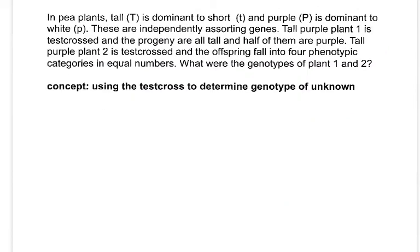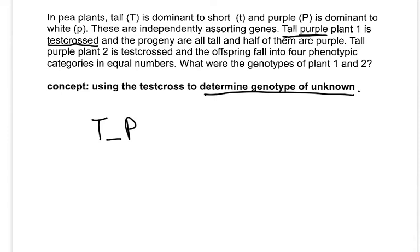Let's do another one with pea plants. Tall is dominant to short, purple is dominant to white, and these are independently assorting genes. We're going to do test crosses. A tall purple plant is test crossed. Whenever you see that, you know you're trying to determine the genotype of an unknown, and the reason it's unknown is because it has the dominant phenotype.